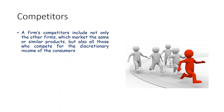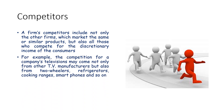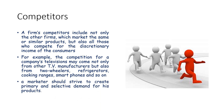A firm's competitors include not only other firms which market the same or similar products but also those who compete for the discretionary income of the consumers. For example, the competition for a TV company may come not only from other TV manufacturers but also from two-wheelers, refrigerators, cooking ranges, smartphones and so on. This competition among these products may be described as desire competition as the primary task here is to influence the basic desire of the consumers. A marketer should strive to create primary and selective demand for his products.